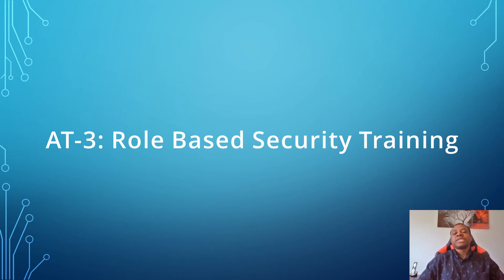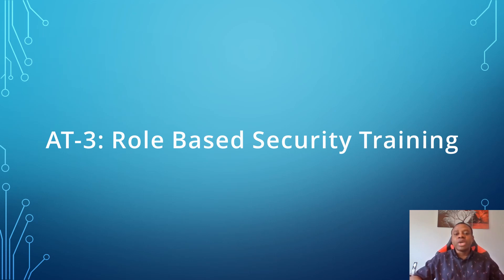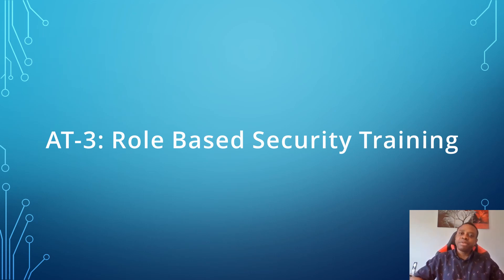We're looking at another control, AT3, which covers role-based security training. AT3 ensures that the organization provides role-based security training to personnel with assigned security roles and responsibilities. This training should be provided before authorizing access to information systems or performing assigned duties, and annually or when required by information system changes. Evidence we can request includes annual role-based training certificates or records completed for system administrators and personnel with assigned roles, responsibilities, or duties.